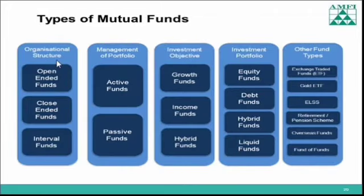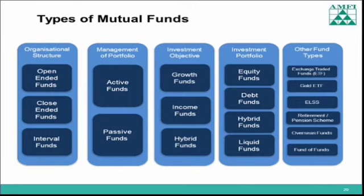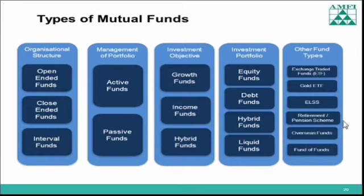Now we will see what are the different types of mutual funds. According to organizational structure, we have open-ended funds, closed-ended funds, and interval funds. Open-ended funds — as the name suggests — allow investors to enter and exit any time. Closed-ended funds are the opposite: within a certain stipulated period only an investor can enter. After the lock-in period, investors cannot enter such funds. Open-ended funds are normally diversified funds; closed-ended funds are normally retirement funds. Interval funds are another category having the features of both open-ended and closed-ended funds. We will have a clear idea in coming slides for each category.